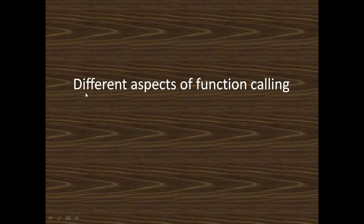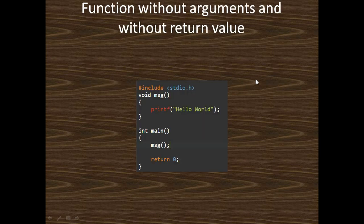Now I describe different aspects of function calling. First: function without arguments and without return value. Here, no return type and no parameter is defined. In this function, we just print a message "hello world". In the main function, we call the message function. When you call the message function, it executes the simple statement.